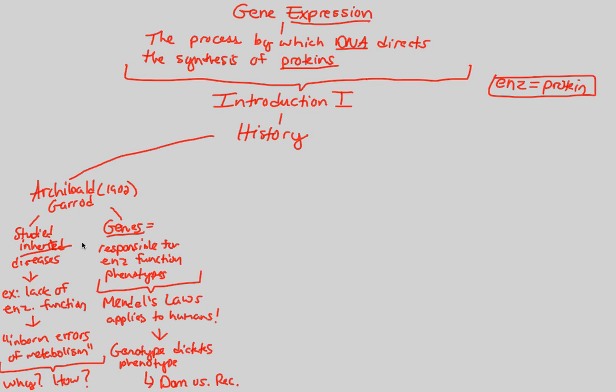So overall, the idea behind Archibald Garrod is very simple, but very powerful. He proved that when we have associated diseases that involve a lack of enzymatic function, that lack of function is due to inborn errors, specifically, errors that are responsible for enzymatic function phenotypes. If an enzyme needs to do a specific job and it's not doing that job, that is because of an inborn error. And that is because the genotype has an error within it that dictates an erroneous phenotype, a bad phenotype, which is furthermore established by a dominant versus recessive relationship that's also applied to Mendel's laws.